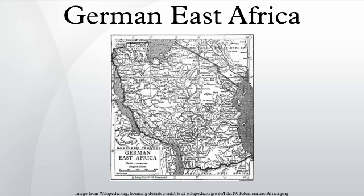Between 1891 and 1894, the Hehe tribe, led by Chief Mkwawa, resisted German expansion. They were defeated because rival tribes supported the Germans. After years of guerrilla warfare, Mkwawa himself was cornered and committed suicide in 1898.